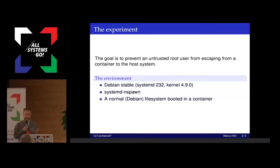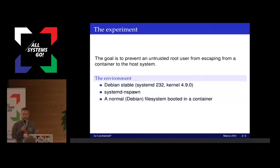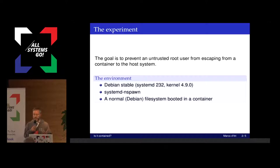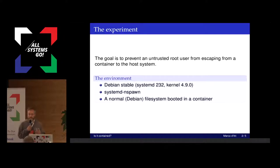My little experiment: I use the Debian stable system, so slightly old systemd and kernels, and spawn to create a container. In the container there is another normal Debian system built with debootstrap, which is booted the usual way. The idea is that whoever has root in the container should not be able to escape to the main system. I think it will be useful to identify two classes of vulnerabilities: just a plain denial of service, like crashing the system or rebooting it, and the actual access to the host system.